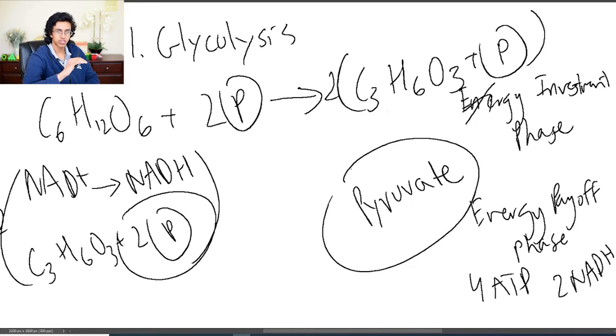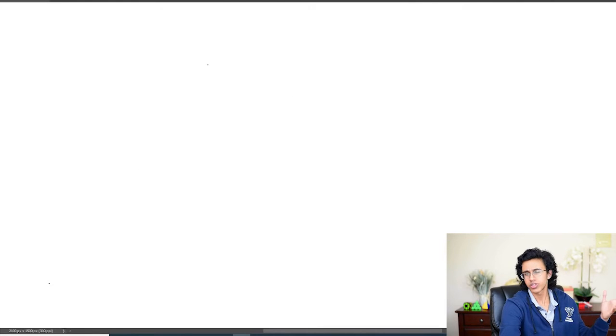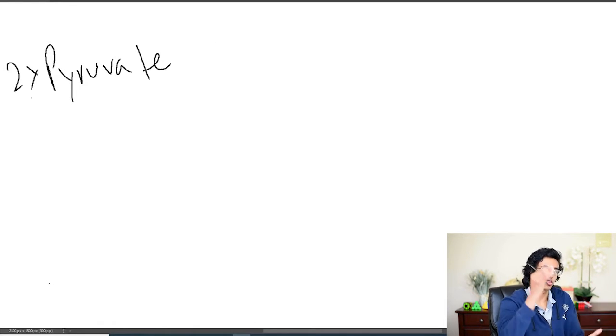At the end of the energy payoff phase you're left with your favorite molecule pyruvate. The main thing you got to remember about glycolysis is that you start with glucose you end with pyruvate and you get two ATP and two NADHs. Okay now we're done with glycolysis and now we've got to go to the citric acid cycle. However we have pyruvate now. In fact we have two pyruvates because we split our glucose in half and each of those halves became a pyruvate.